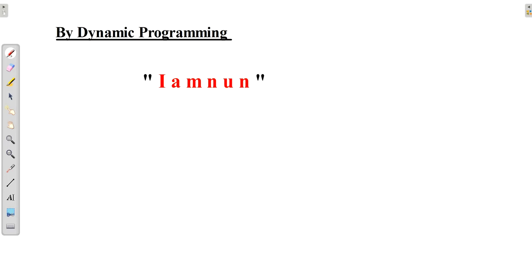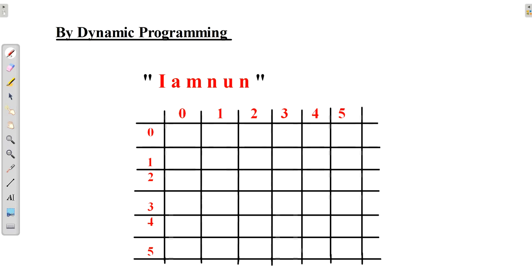Now let's solve this with dynamic programming. I take the same string 'iamnun' and we will solve this with the help of a 6x6 matrix, because it's a six-letter word. I have defined the indexes for 'iamnun'.